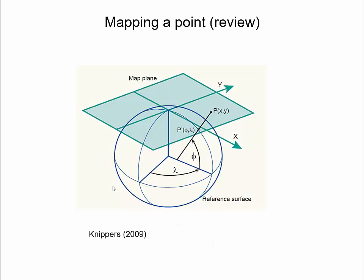A map projection transforms locations of a spherical Earth model, the so-called reference surface, into a two-dimensional map with x and y, or easting and northing coordinates. Through the projection, each point in the map corresponds to a point on the reference surface, as shown here for point P as an example.